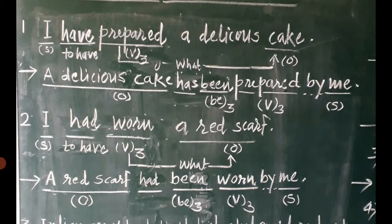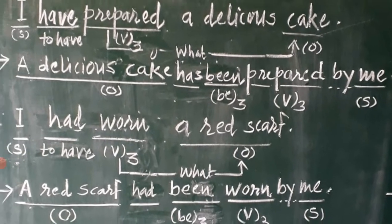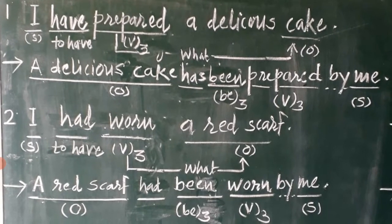As usual, a question is asked — what? — and its answer is 'a delicious cake.' So in this sentence we have subject, then representative of 'to have,' afterwards past participle form of an action verb, and an object. This is an ideal sentence for getting it converted into a passive structure.